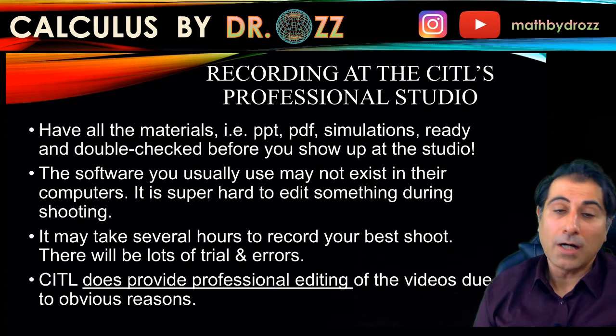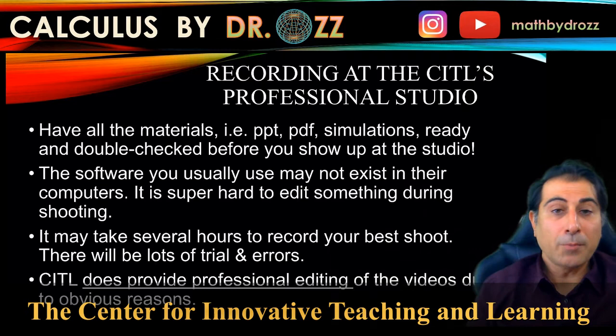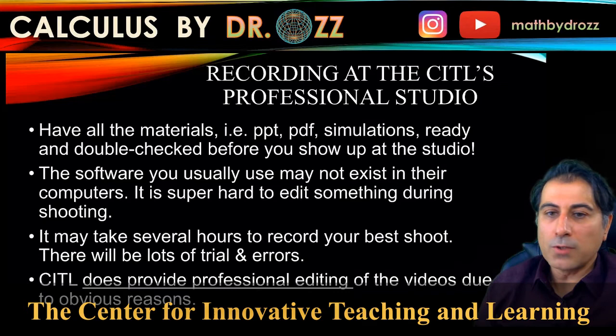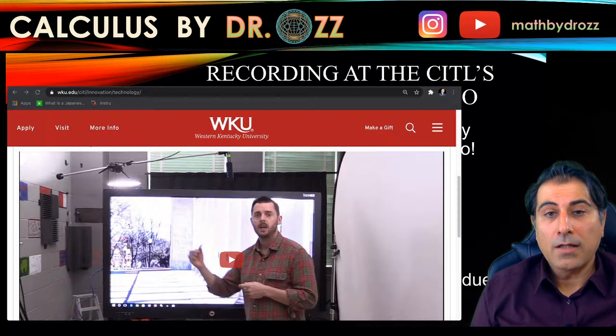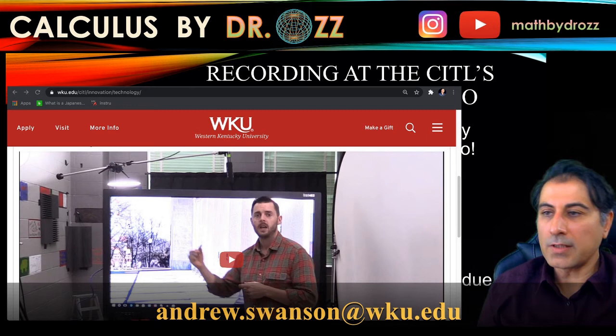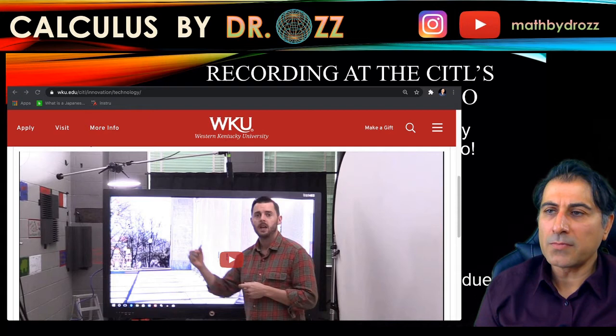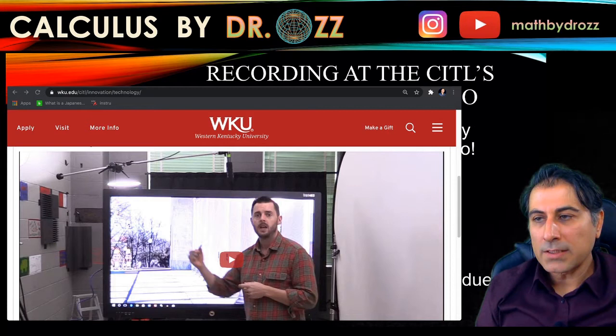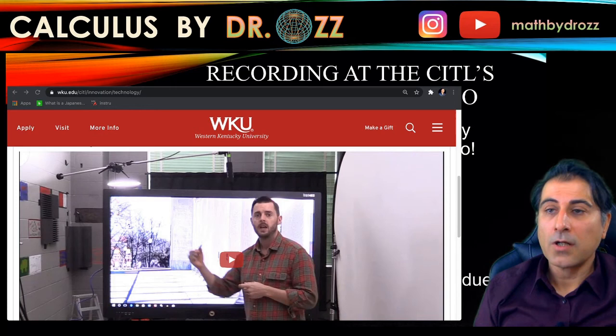If you're teaching at WKU, you have two options. One obvious option is to make an appointment at the professional studio of CITL at WKU and have them record your lectures or recitations. They have green screen technology and a light touch board technology — tech specialist Andrew Swanson helps with the setup. When you go there, you have a glass screen and you can write on it with special markers.